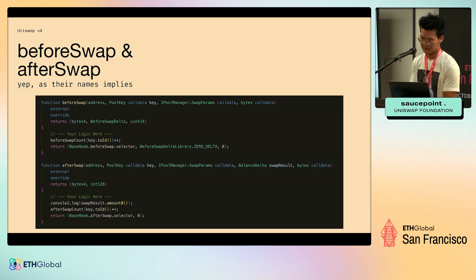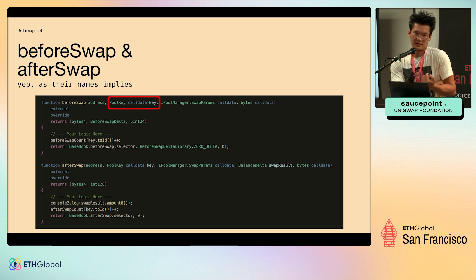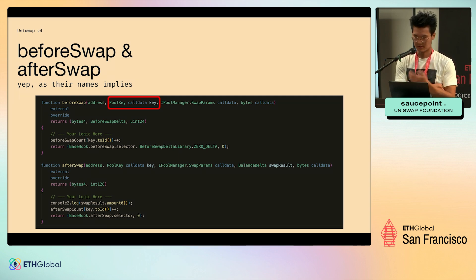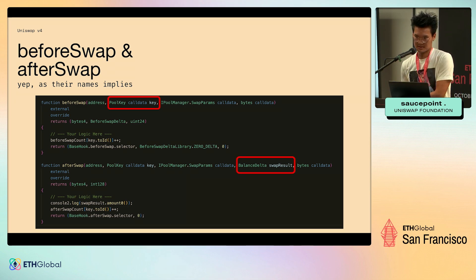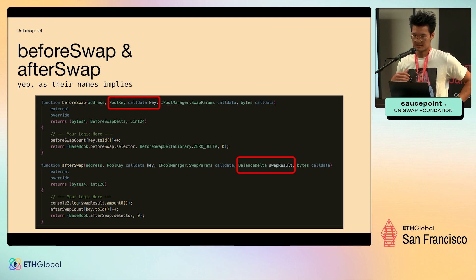In the before swap function, you always know which trading pair you're operating on. Your hook might be specifically tailored for a stable pair like USDC and Tether, or ETH and staked ETH, so you can discern different logic depending on the pool. In after swap, you get the results of the swap — both how many tokens were sent in and how many tokens are going out — so you could run logic like bonus rewards or collect fees proportional to the swap result.